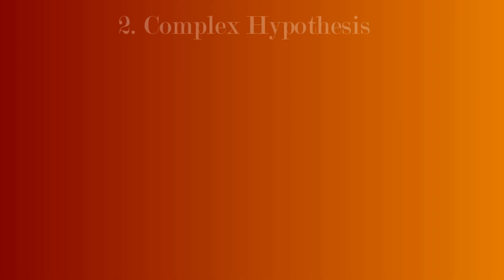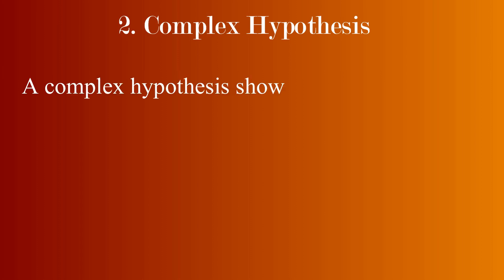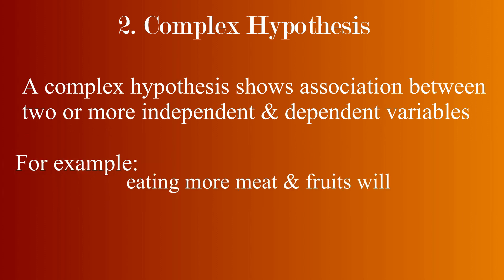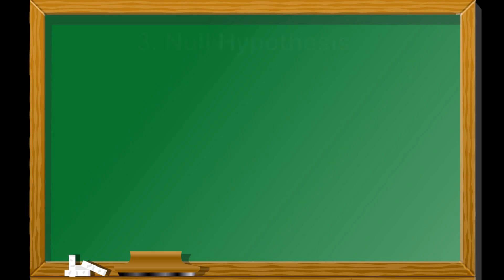Number 2. Complex hypothesis. A complex hypothesis shows associations between two or more independent variable or dependent variable. For example, eating more meat and fruits will lead to gaining weight and a glowing skin. In this case, there are two independent variables and two dependent variables.